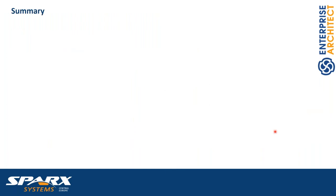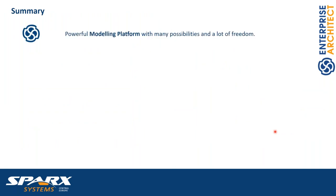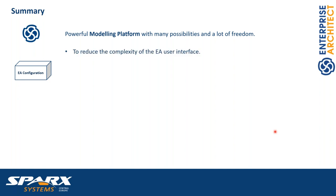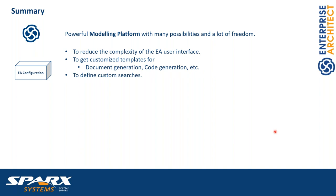So we are nearly finished. To summarize: with Enterprise Architect, we have a really powerful platform with many possibilities and a lot of freedom — including the freedom to configure and customize it and add additional rules, constraints, and guidelines. When it comes to configuration, we can reduce the complexity of the user interface, get custom templates used to generate documents, generate code, generate XML schemas, and add custom searches. Remember, the Enterprise Architect repository is a database, so it's easy to write searches that allow us to answer questions easily.